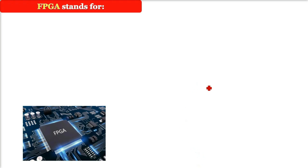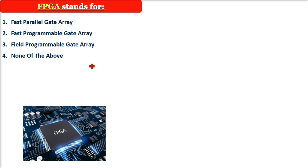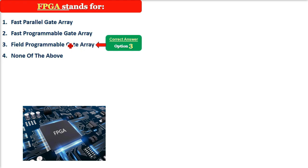FPGA stands for — what is the full form of FPGA? The options are: fast parallel gate array, fast programmable gate array, field programmable gate array, or none of the above. The correct answer is the third one: field programmable gate array.